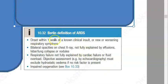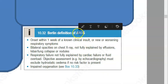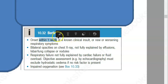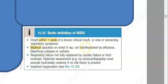Let us now check the Berlin definition of ARDS. The word 'acute' means it should be within one week. There are bilateral opacities — bilaterally affected — and these opacities are NOT explained by effusions, lung collapse, or nodules. There is respiratory failure and impaired oxygenation. So the Berlin definition: within one week, respiratory failure with impaired oxygenation, and bilateral opacities not explained by collapse or effusions — mostly in the dependent parts.